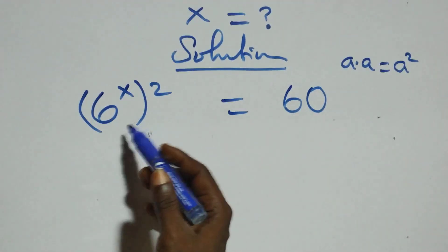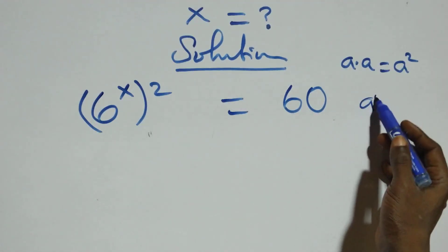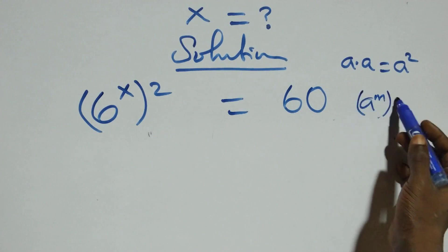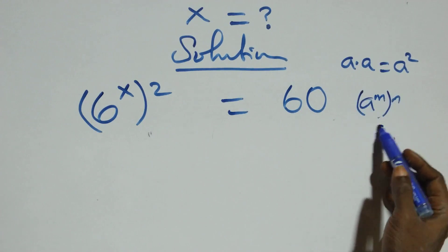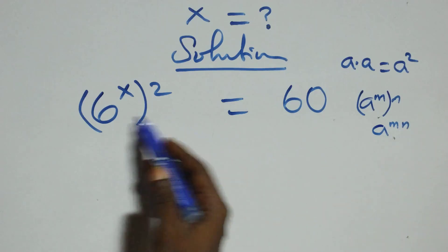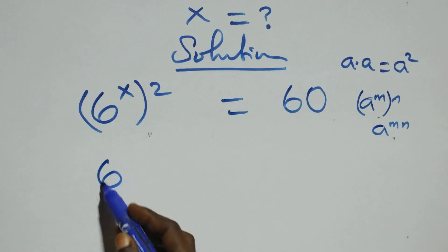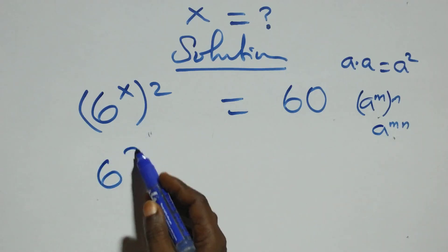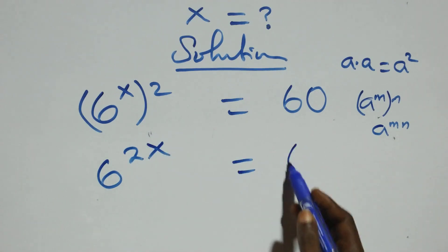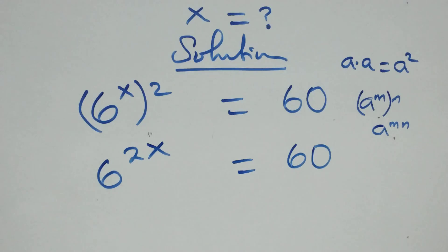The next step here: this follows when we have a raised to power m, raised to power n — this is the same thing as a raised to power m times n. So this power multiplies and we have 6 raised to power 2x equals to 60 on this side.